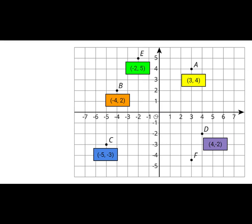Last one — try point F on your own. Let's check your answer. Always start at the origin: move 3 units to the right and then 4 and a half units down. Do you see that half? Our coordinate pair would be (3, −4.5).